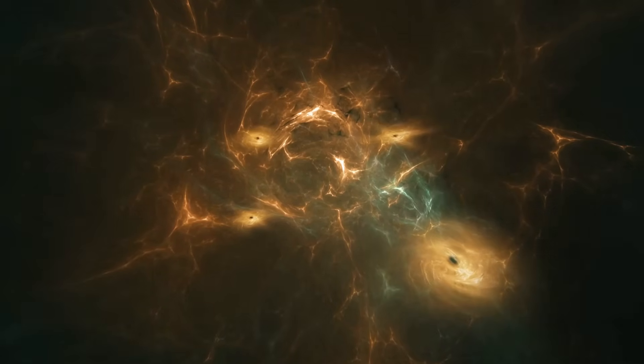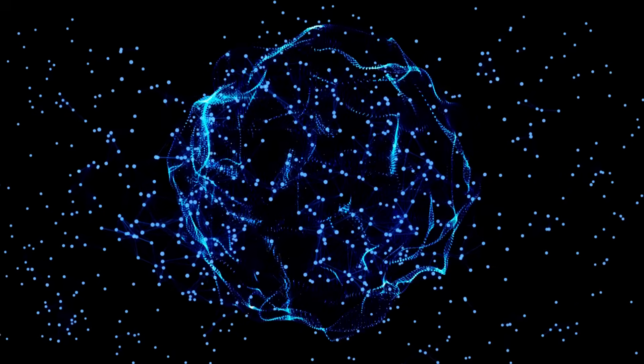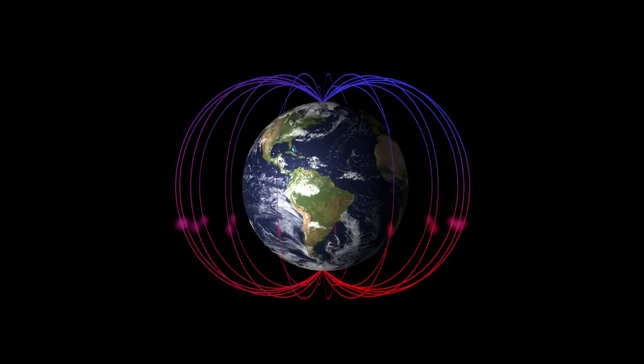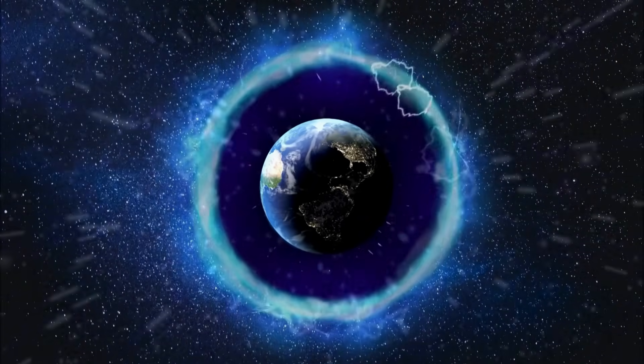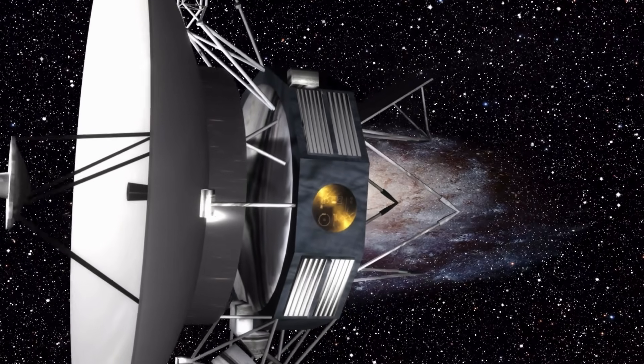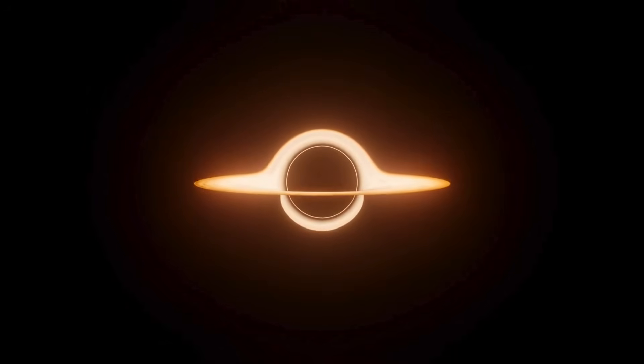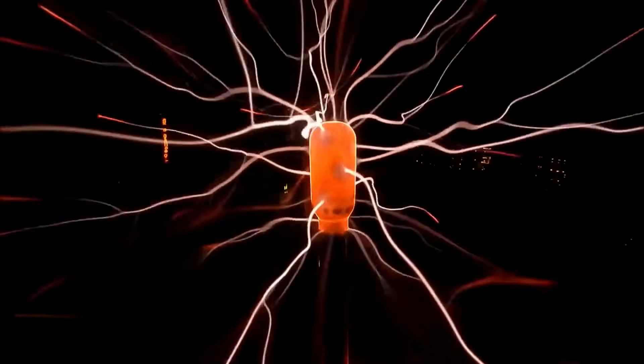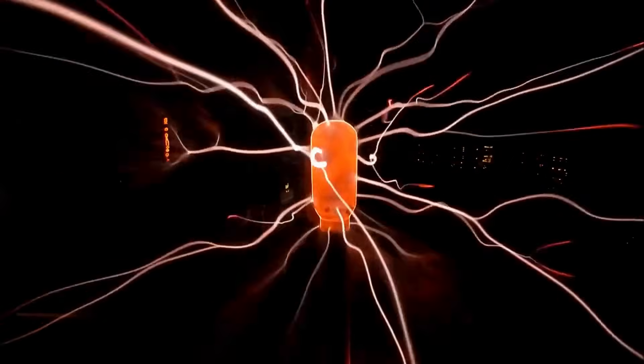One of the engineers working on decoding Voyager's latest transmissions made a curious observation. When visualizing the magnetic field variations as a three-dimensional model over time, a shape began to emerge. It wasn't random. It wasn't noise. It looked like a spiral framework, repeated with near-perfect symmetry. Some now propose it may be a complex magnetic structure, a pattern beyond our current understanding. Others suggest it could be a natural phenomenon not yet catalogued in astrophysics.